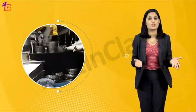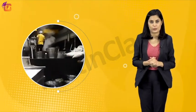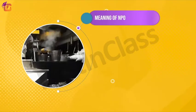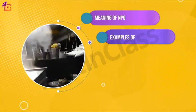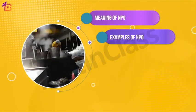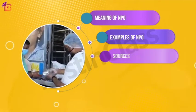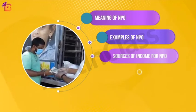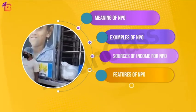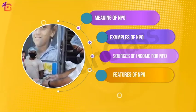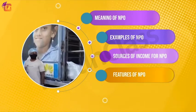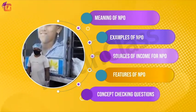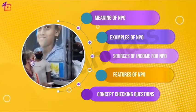The course of our discussion would be structured as below. We'll first discuss the meaning of not-for-profit organizations and examples of not-for-profit organizations. Then we'll discuss sources of income of not-for-profit organizations, and then we'll discuss the main features of not-for-profit organizations. Finally, we'll take concept-checking questions to test our understanding of all the concepts discussed.